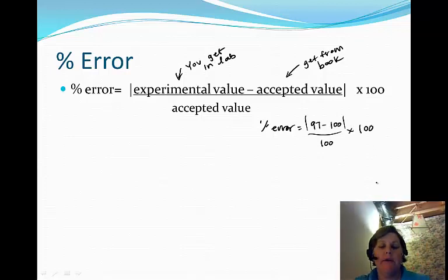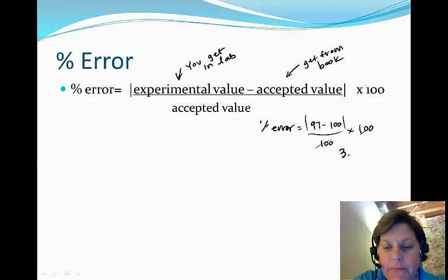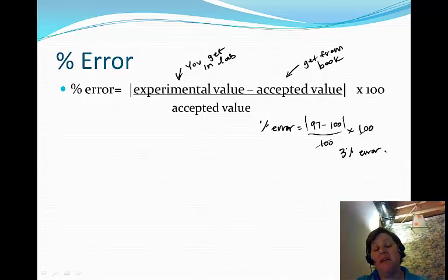Well, you can see the numerator, the number is 3, and of course, these cancel mathematically. That rarely happens in percent error because usually the accepted value for things is not 100. And we have about 3 percent error. Not too great, but not too shabby either. So that's how we calculate percent error.